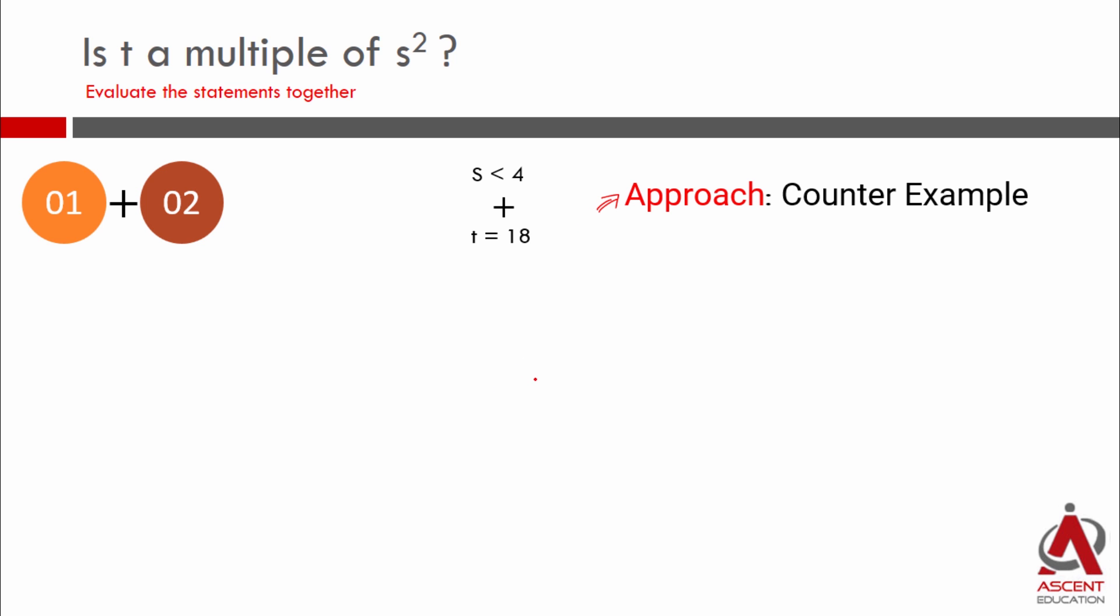The example should satisfy both conditions. It should pick an s which is less than 4 and that s should be a prime number. So we don't have much choice. s can either be 2 or s can be 3. Those are the only two prime numbers less than 4. And t should be equal to 18. Let us see whether we are able to get a definite yes or no.